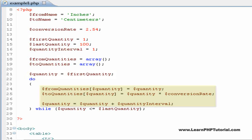The body of the loop is then executed, and using quantity as the key for each of the two arrays, we assign quantity as the value we're converting from. Then the converted value is calculated and assigned to the from quantity array. As the last statement in the loop body, we increment the quantity by the quantity interval.